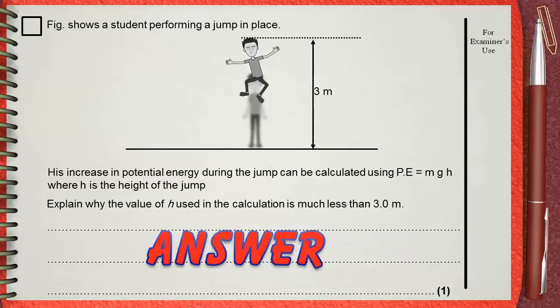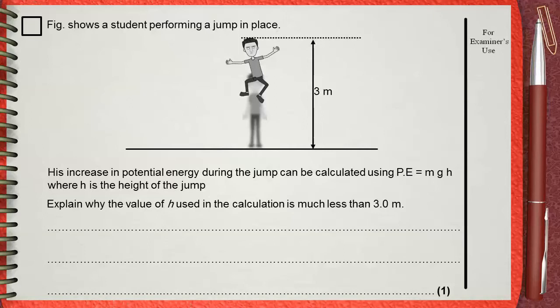There is an important thing we must know about H, which is the height. Height actually does not mean the maximum height of the jump. The real height, or the real increase in height, is how much the center of mass becomes higher. This is the center of mass of the boy while he is on the ground, and this is the center of mass of the boy when he is at his maximum height.